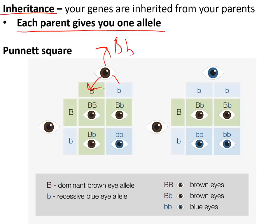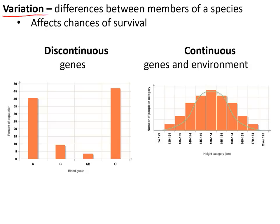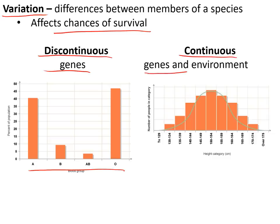In a Punnett square, if this person's sperm are half big B and half little b, and this person's eggs are half big B and half little b, you can see the different combinations that result. Variation is the differences between members of the same species and affects chances of survival. It can be discontinuous — for example blood type A, B, AB, or O — caused only by genes. Or it can be continuous — such as height — caused by both genes and environment, for example a parent's genes and a child's diet.